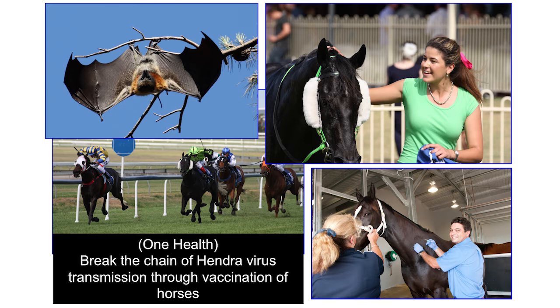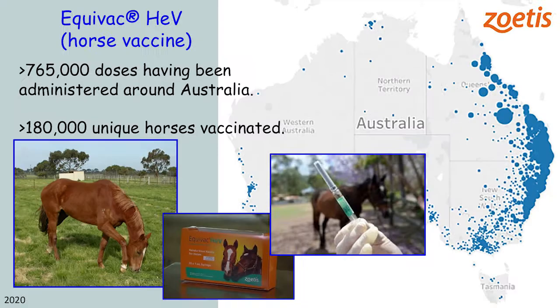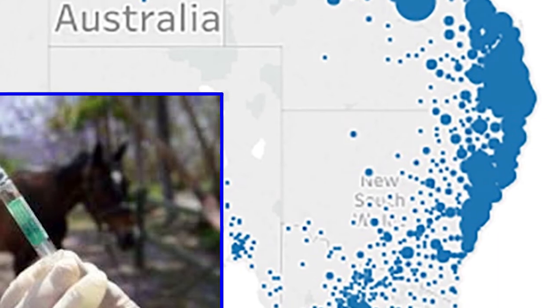This vaccine was fully approved in 2015. It's known as Equivac Hendra virus and is marketed by Zoetis in Australia for use in horses. It is a good example of the One Health approach to preventing infectious disease. The horse industry is a very important economic industry in Australia, and breaking that chain to prevent horse deaths as well as subsequent human infections was a goal that many scientists were working towards. More than 765,000 doses of this vaccine have been administered to horses in and around Australia, particularly on the east coast where high-density horse populations are found.